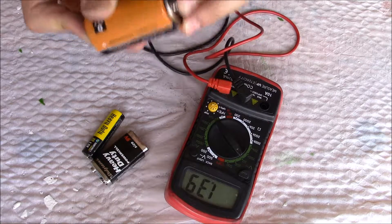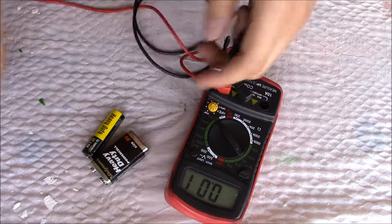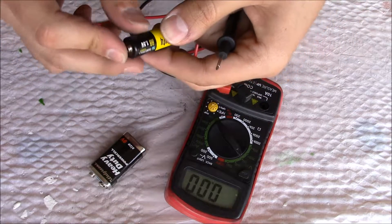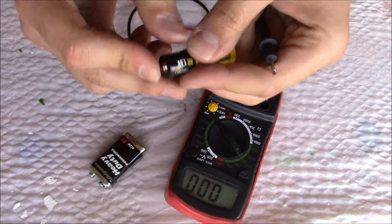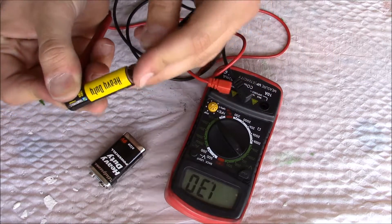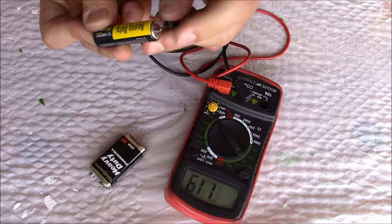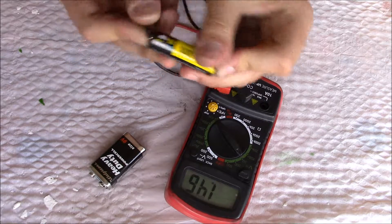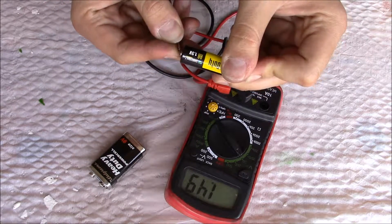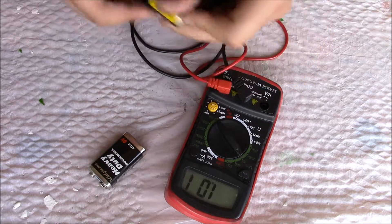Here we have another 1.5 volt battery. This one should be new, I did not use this one at all. Put the positive on positive and negative on negative. See, this one's almost 1.5, it's brand new, I didn't use it yet.